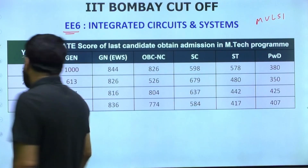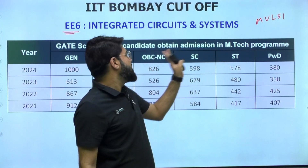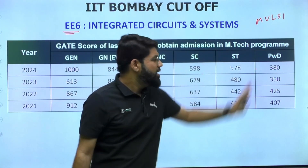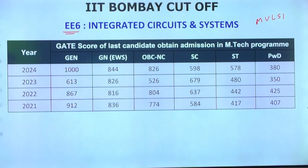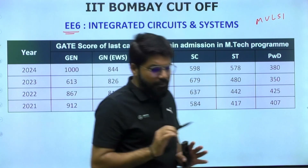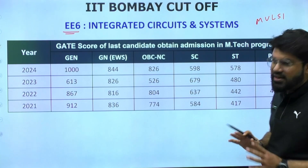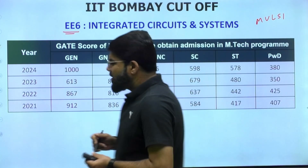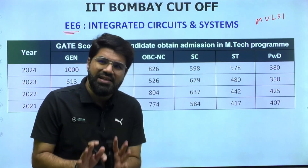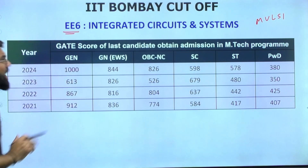For Integrated Circuits and Systems, the 2024 general cutoff was 1000, while 2023 was surprisingly low at 613. Normally it's around 867–912. Since it's direct admission with no interview, I'd recommend applying if you have 800+ in the general category, though it's not guaranteed at that score.